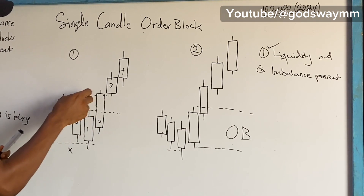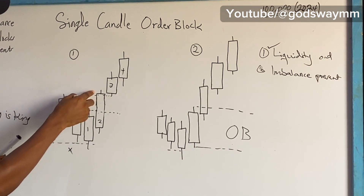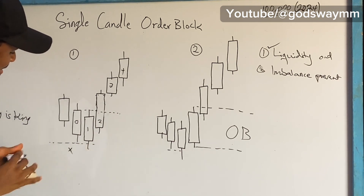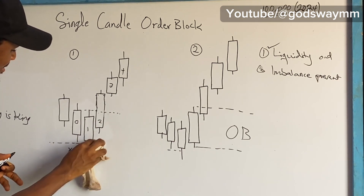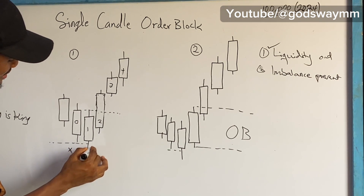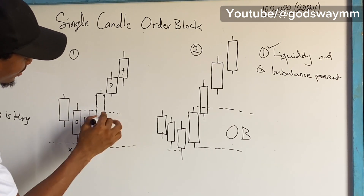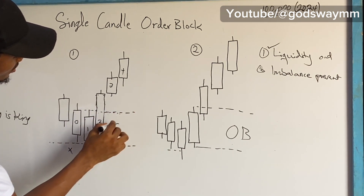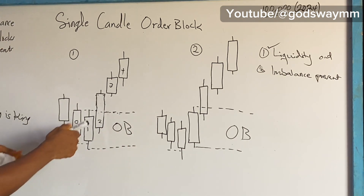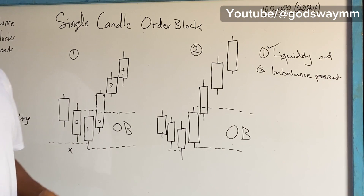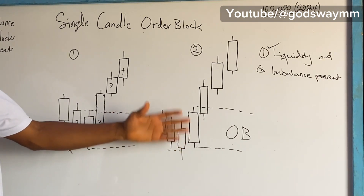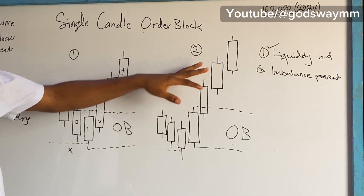Since both conditions are met — liquidity taken out and imbalance present — we can consider candle one as an order block, abbreviated OB. So candle one is our order block in diagram one.